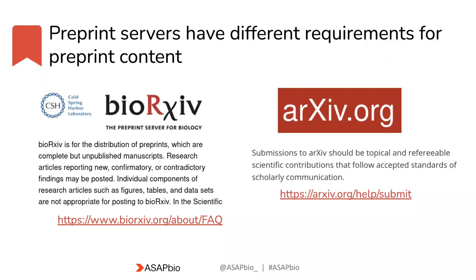Preprint servers also place requirements on manuscript content. Some servers accept all types of scholarly papers, whereas others have more strict requirements. As two examples, bioRxiv states: research articles reporting new, confirmatory, or contradictory findings may be posted. bioRxiv is intended for rapid sharing of new research results defined as experimental, mathematical, or computational work. Manuscripts that solely summarize existing knowledge or present narrative theories are inappropriate, as are term papers, book excerpts, and undergraduate dissertations.